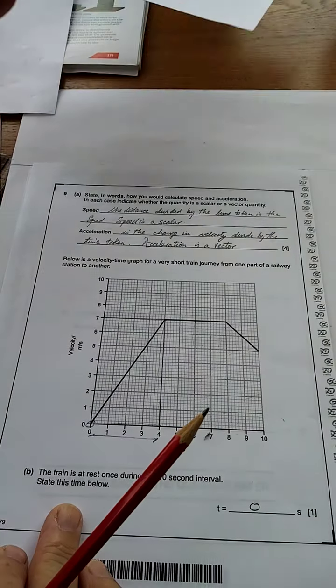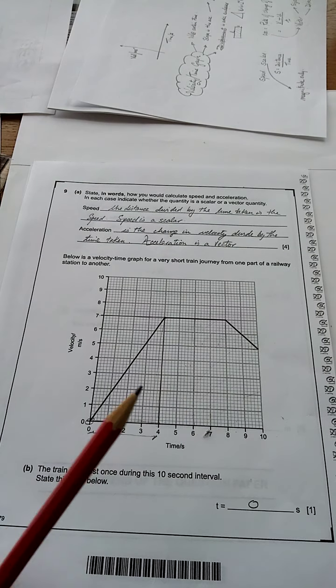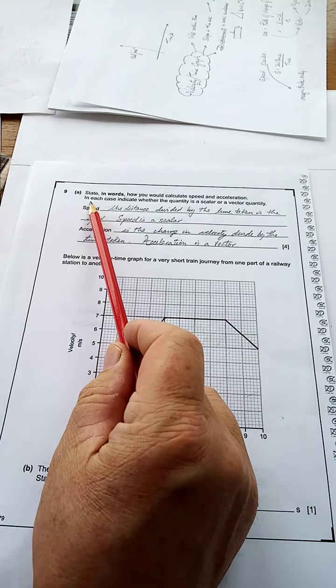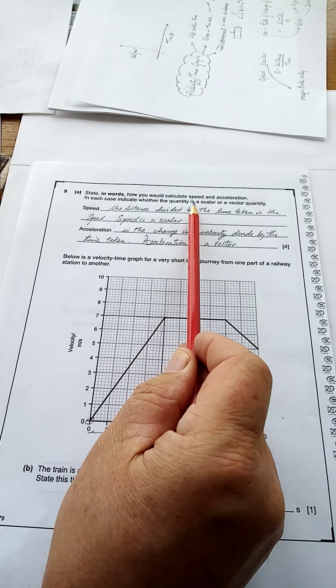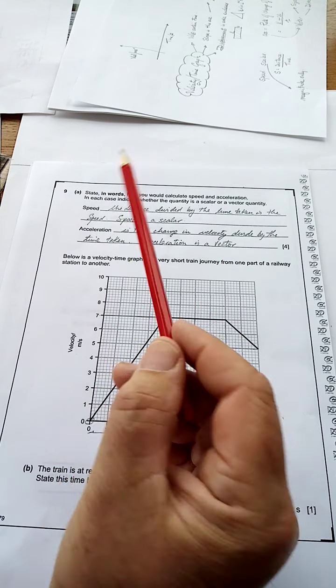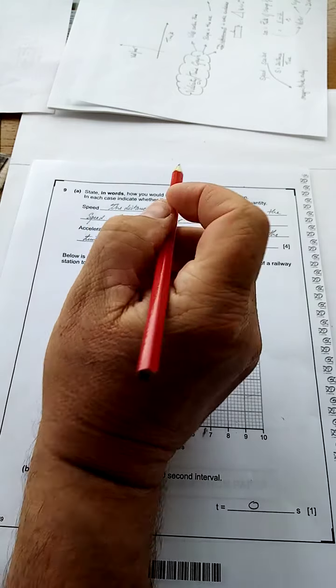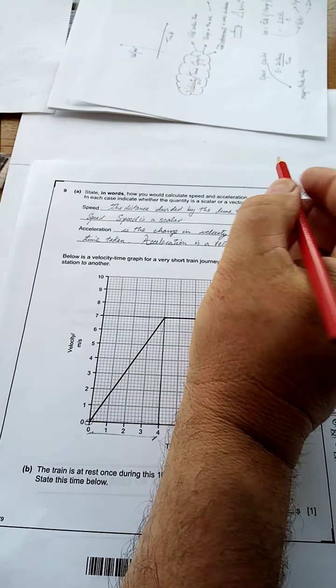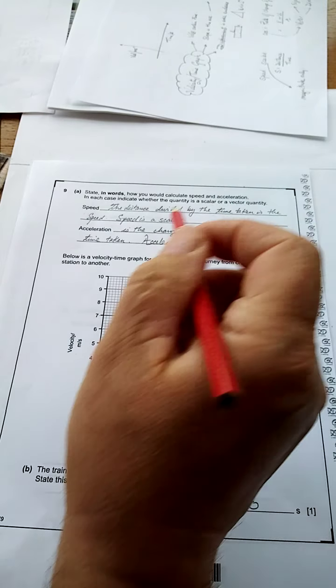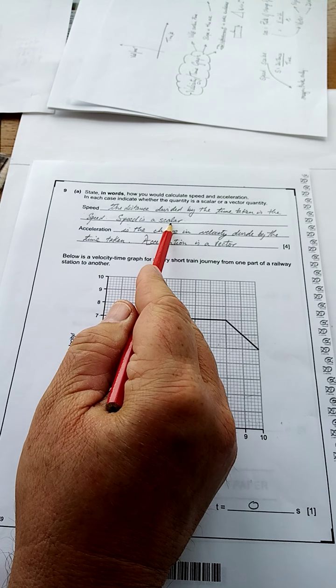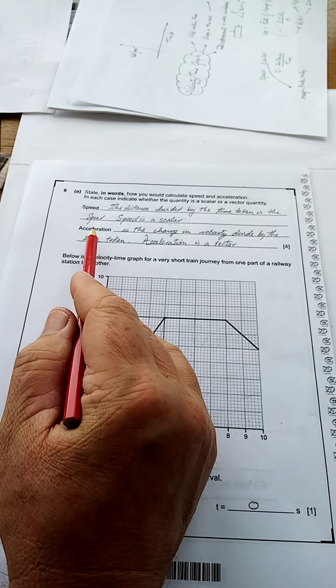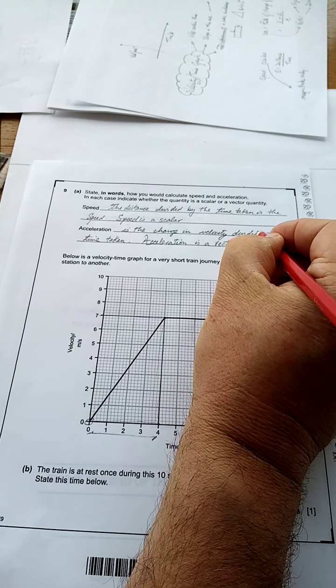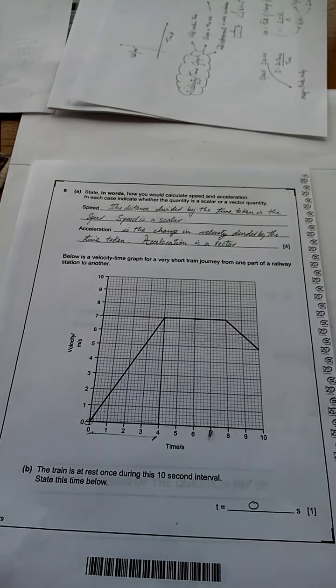Now, let's look at the question. So, state in words how you would calculate the speed and acceleration. And each indicate whether the quantity is a scalar or a vector. The speed is the distance divided by the time taken. Speed's a scalar. Learn it. Acceleration is the change from velocity divided by the time taken. Acceleration is a vector. Learn it.